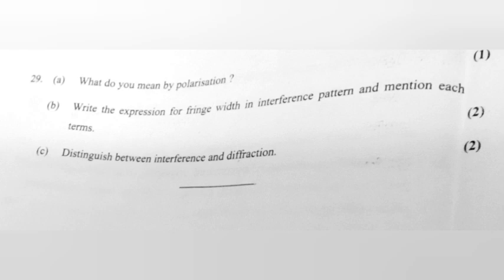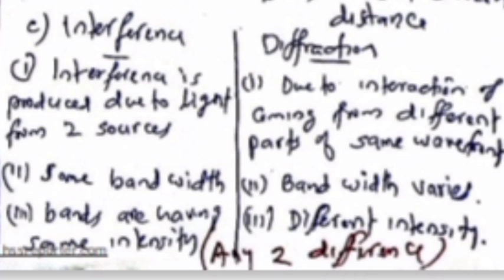Distinguish between interference and diffraction: (1) Interference is produced due to light from two sources; diffraction is due to interaction of light coming from different parts of the same wavefront. (2) In interference, bandwidth is the same; in diffraction, bandwidth varies. (3) In interference, bands have the same intensity; in diffraction, intensity differs.